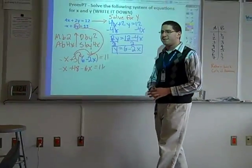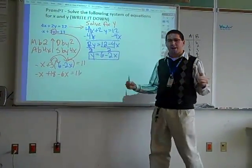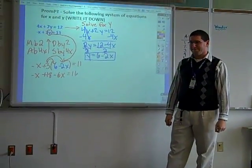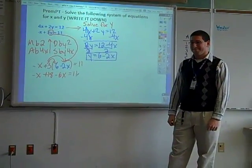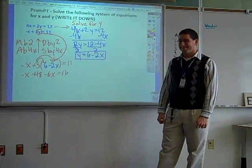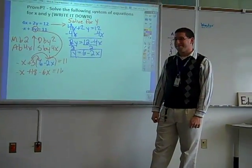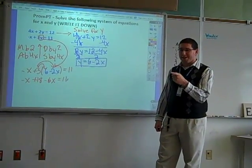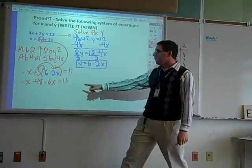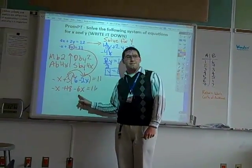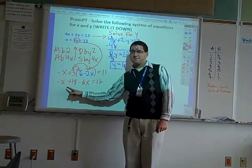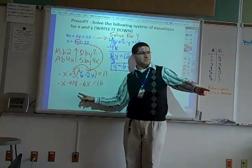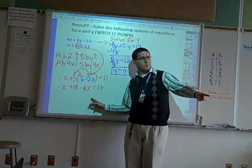The negative x and the negative 6 — what do I get when I combine the two? If you combine them, that is like better. You'll see what we have is negative x minus negative 6x.